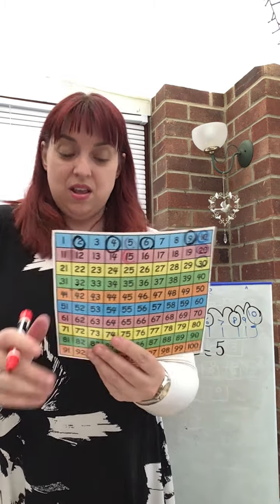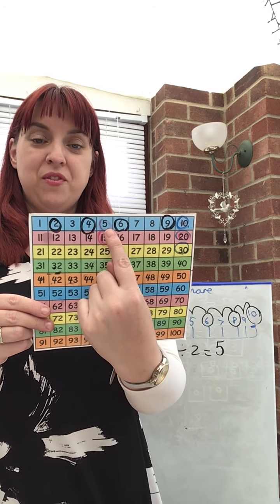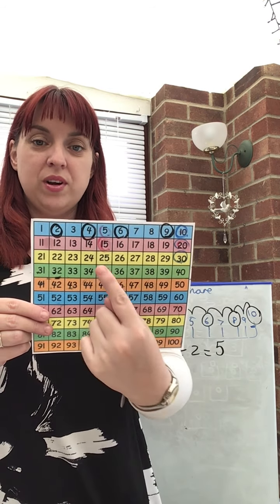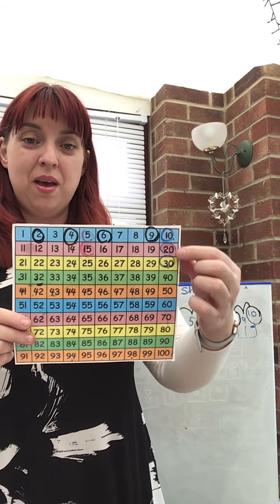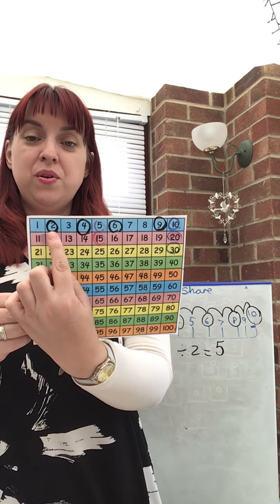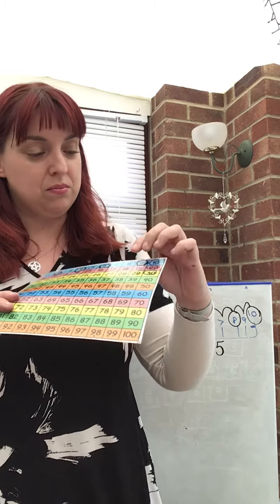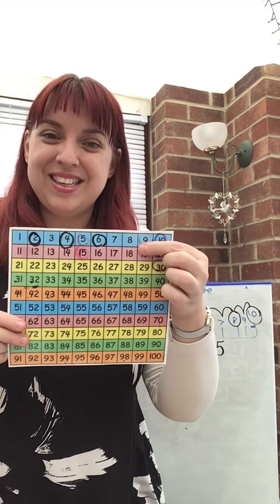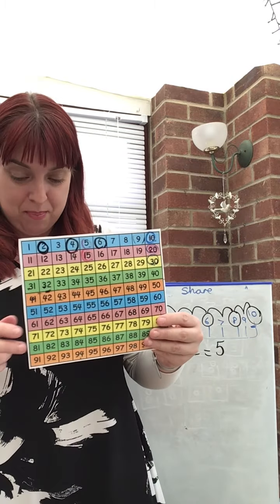So again, here you can then get the children to start to discuss, well, what patterns can you see? So here, my five times table, it always ends in a five or a zero. Look where it is, the hundred square. My ten times table, right on the end column, always ends in a zero. My twos, every other column, it always ends in a two, four, six, eight, or a zero. Is it odd? Is it even? And discussions about that point.